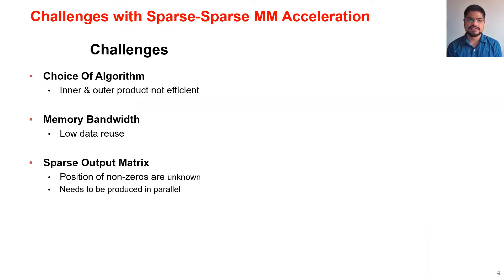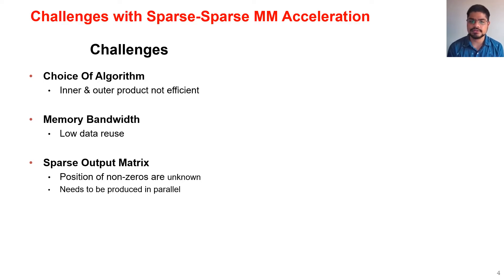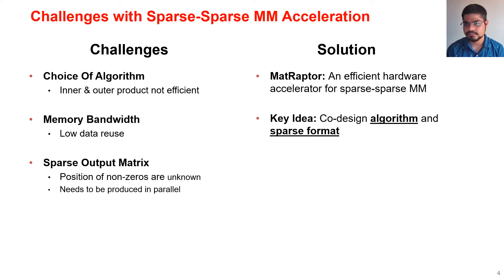There are key challenges in accelerating sparse-sparse MM. The first is the choice of algorithm — commonly used approaches such as inner and outer products tend to be inefficient, requiring rethinking of the algorithm. The second is memory bandwidth utilization: due to low data reuse of sparse matrices, we need memory access patterns that achieve high bandwidth utilization. Finally, the sparse output matrix format itself is a challenge, since different PEs need to produce the sparse output in parallel and the number and position of non-zeros are not known ahead of time, requiring a mechanism so PEs can work independently without waiting for each other.